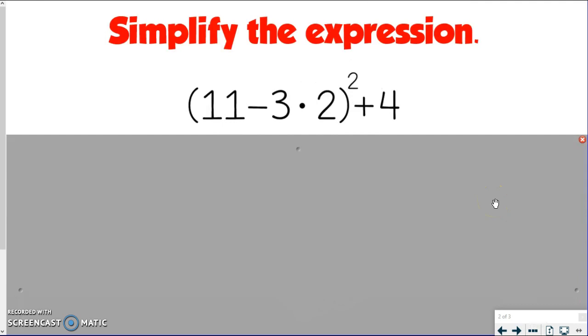But otherwise, the next one is what happens when we have parentheses and exponents, meaning when the exponent is on the outside. So again, we need to simplify everything in the parentheses first. But we're going to keep bringing this exponent along with us until we get our final answer from within the parentheses. And then the exponent will apply to whatever that number ends up being.